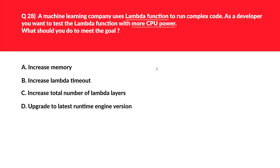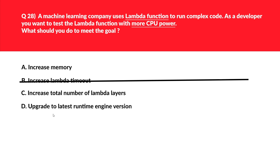As a Developer Associate you need to be familiar with AWS Lambda — it should be at your fingertips. Let's look at option B first: 'increase Lambda timeout.' Lambda can run a maximum of 15 minutes. The option doesn't specify the new timeout limit — if the complex code takes about 14 minutes to run and we only increase the timeout to 10 minutes, it will still fail. That's not what we're looking for — more CPU power. Option B is out. Option D says 'upgrade to the latest runtime engine version' — upgrading the runtime won't increase CPU power in any way. This is just a distractor. Reject option D.